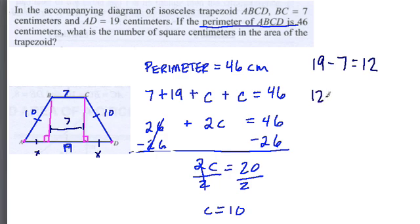So then 12 divided by 2 is the length of x, or each segment. And x, each x is equal to 6. We can combine that into one statement. 19 minus 7 divided by 2, that equals x. So x is equal to 6 here, and 6 there.